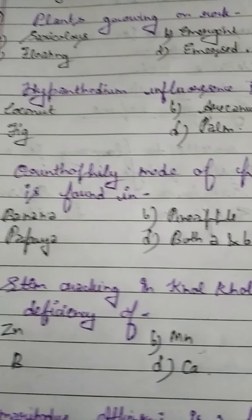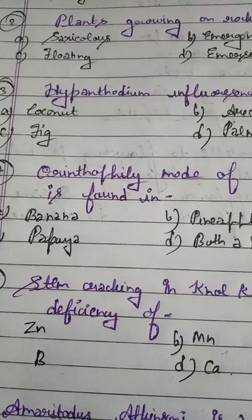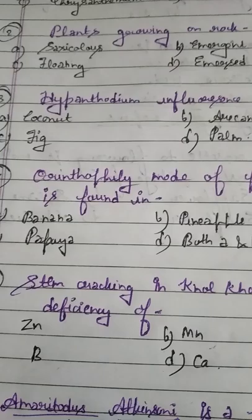Student, question number 4. Ornithophily mode of pollination is found in — Option A: Banana, Option B: Pineapple, Option C: Papaya, Option D: both A and B. Ornithophily is pollination by birds. Also remember Chiropterophily, which is pollination by bat.